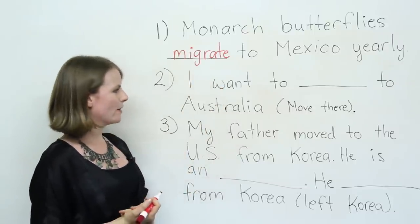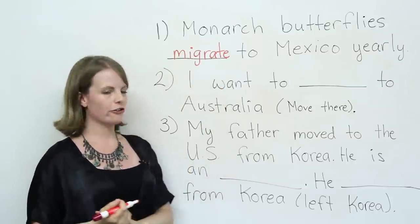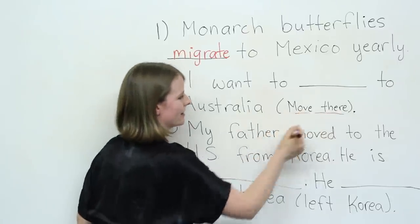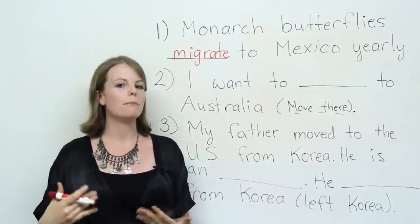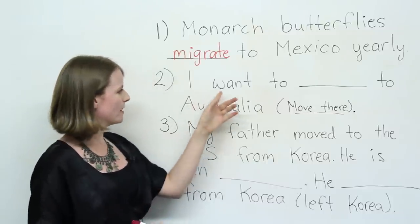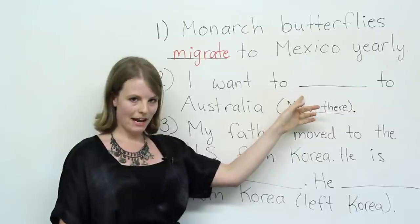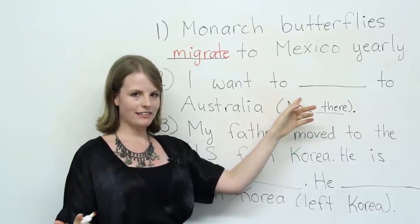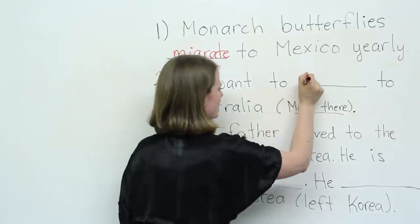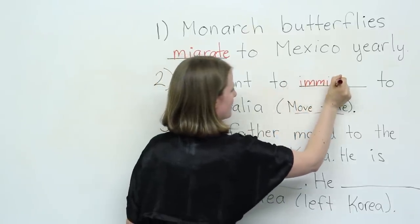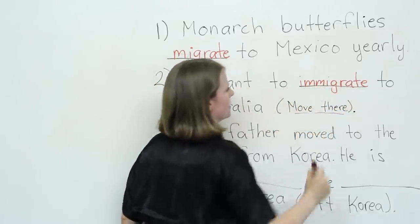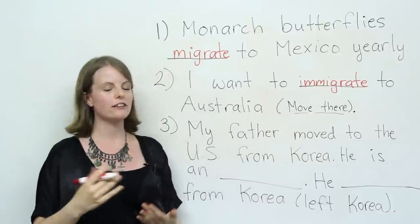Number two: I want to ___ to Australia. The answer should mean 'move to Australia.' Do you think it's migrate, immigrate, or emigrate? If you said immigrate, you're correct. I want to immigrate to Australia.